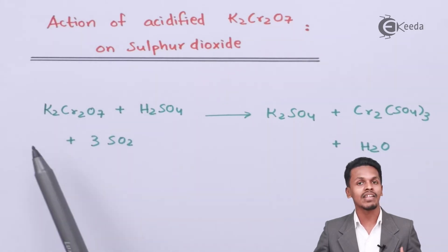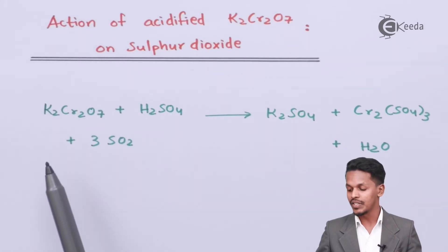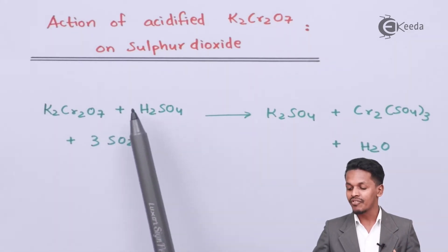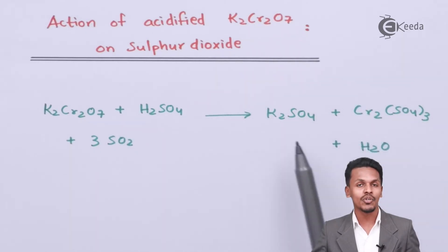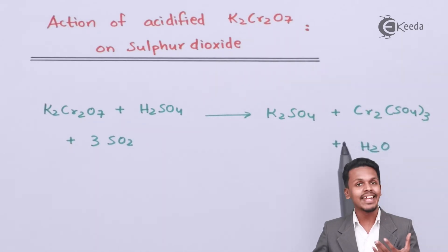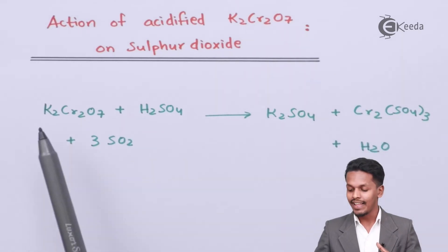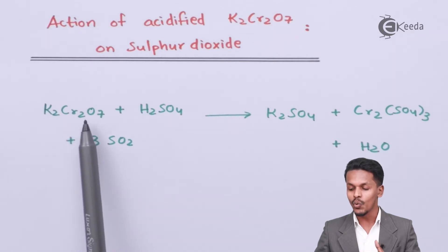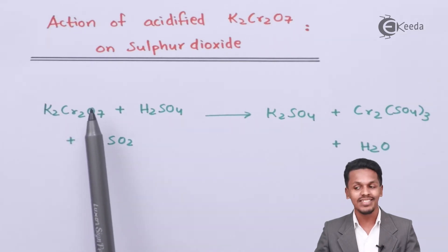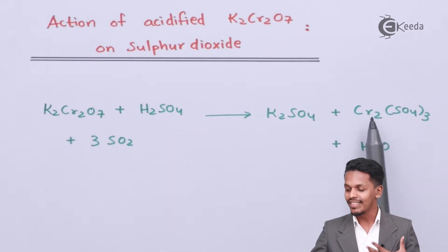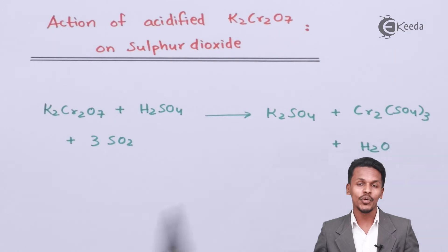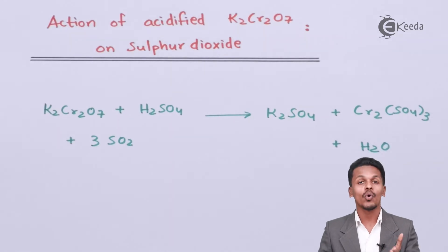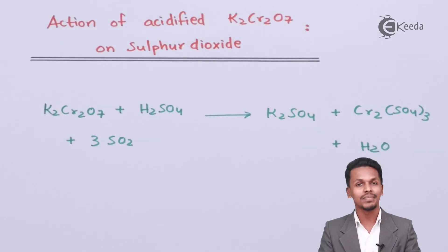The color change we observe is that the orange-red color solution of K2Cr2O7 turns into a green color solution after the reaction. This indicates the conversion of the Cr2O7²⁻ ion to Cr2(SO4)3. This color change is the key observation of this reaction.